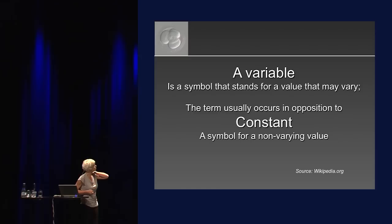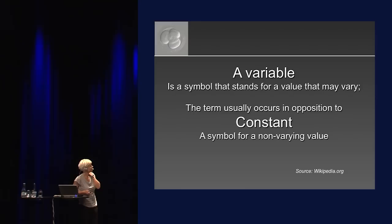A variable is a symbol that stands for a value that may vary. The term usually occurs in opposition to constant — a symbol for a non-varying value. Our patients, like we talked about before, are obviously our biggest variable and we can only try to keep everything else as constant as we can, allowing patients, maybe in the future, to be our only variable.